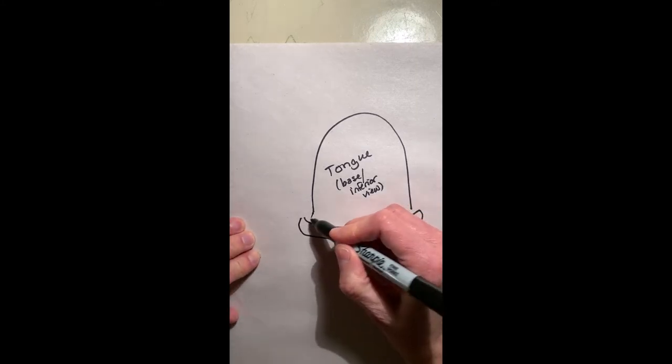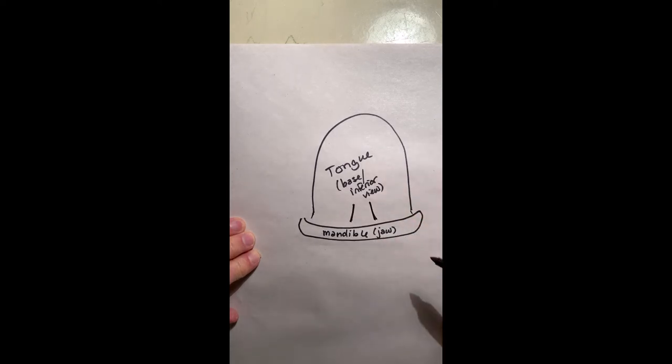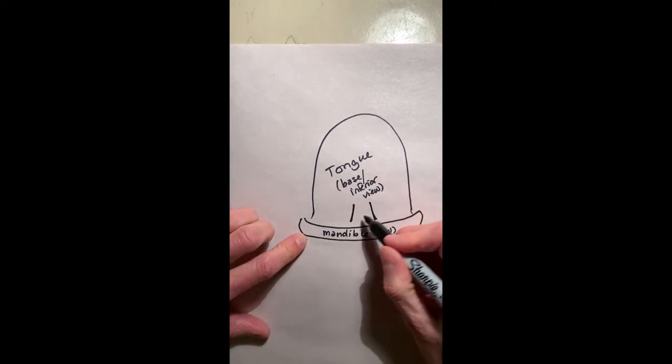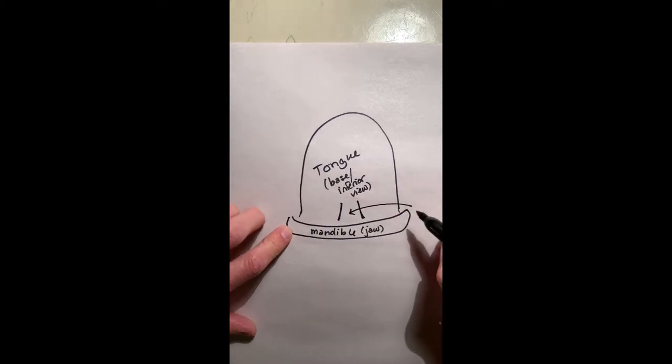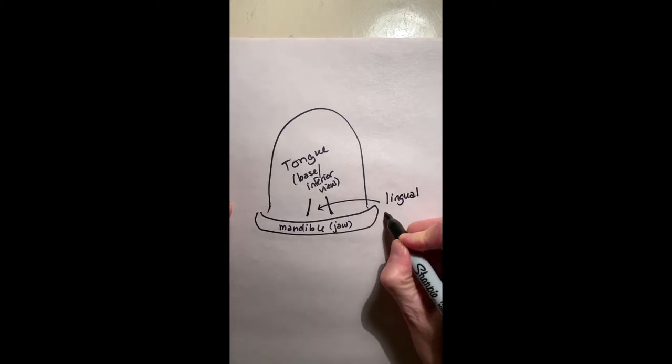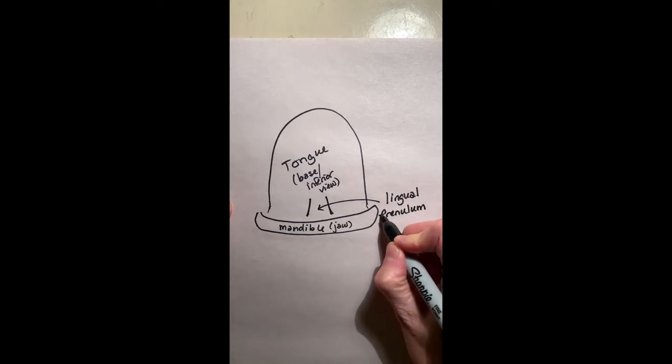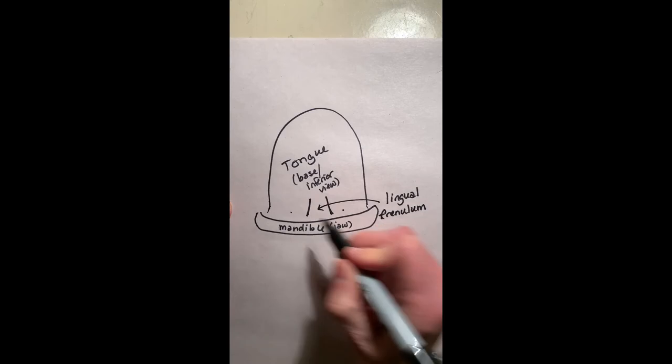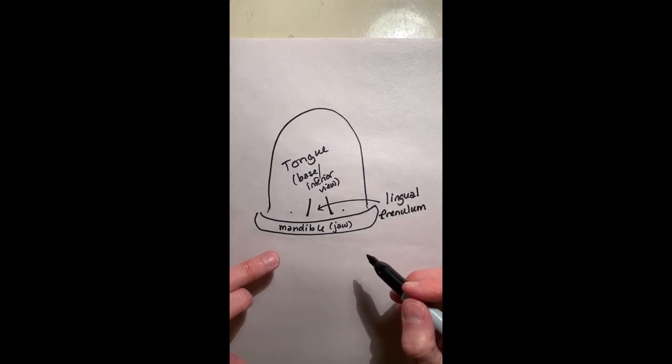The thing that's holding the tongue to the mandible is a piece of tissue that you have on your tongue underneath when you look, and you can see it pretty easily. It's called the lingual frenulum. You'll see that there are salivary ducts on either side of it. The lingual frenulum is just a piece of tissue that connects the tongue to the floor of the mouth.